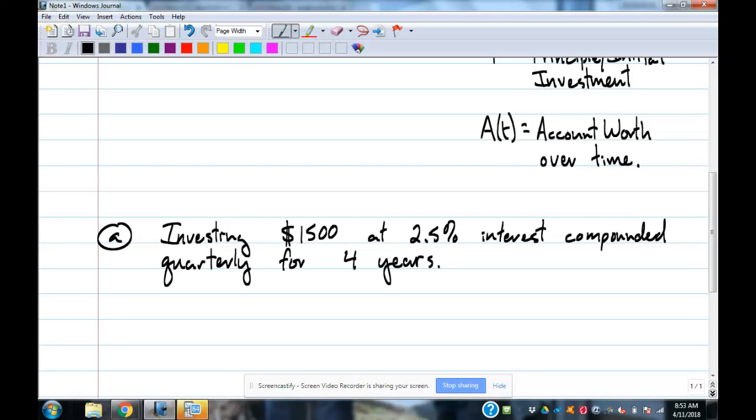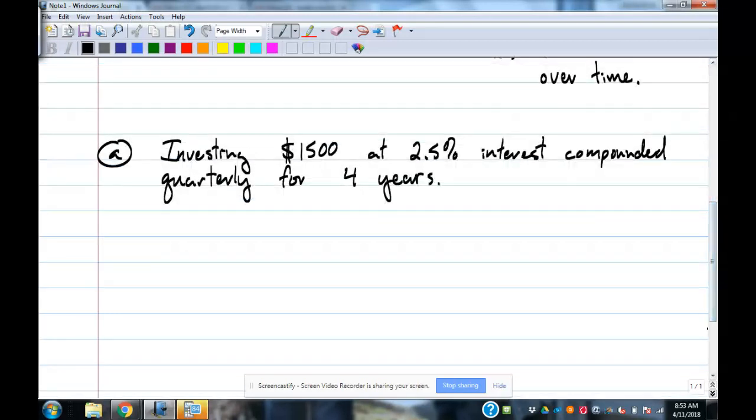Because we're going to leave it there for four years and not pull anything out, the bank says, oh, we're going to give you more interest than what we normally do. We're going to give you 2.5% quarterly for that. So what we're going to do is we're going to figure out how much is our account worth after this amount of time. These are the simplest of problems that you'll get for this particular section. This is where we're trying to find account worth.